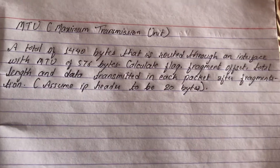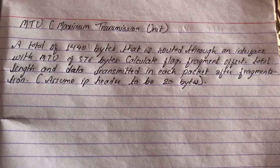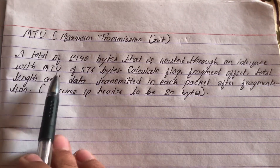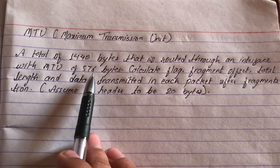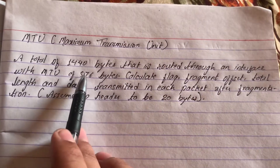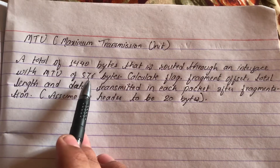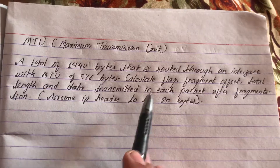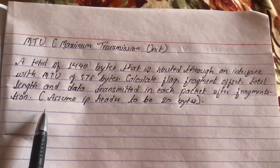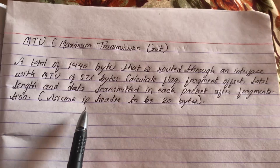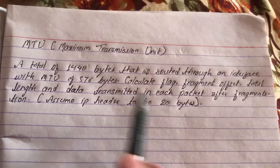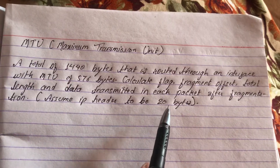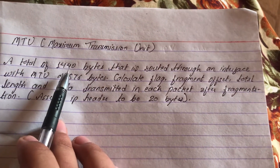The problem states: a total of 1440 bytes is routed through an interface with an MTU of 576 bytes, meaning 576 bytes is the maximum that can be transferred per packet. We need to calculate the flag, fragment offset, total length, and data transmitted in each packet after fragmentation. Assume the IP header to be 20 bytes, so 1420 bytes is the actual data to be transmitted.